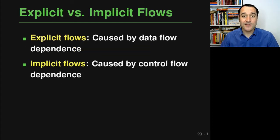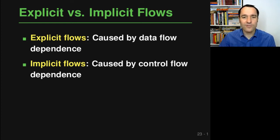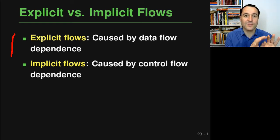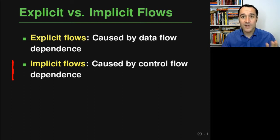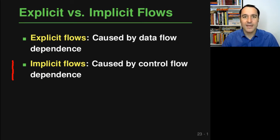When an analysis tracks the flow of information through a program, there are two fundamentally different kinds of flows: explicit flows and implicit flows. An explicit flow is caused by a data flow dependency — some data directly flows to another memory location. In contrast, an implicit flow is caused by a control flow dependency, where some secret data influences whether the flow of control goes one way or another, creating an implicit flow of information.